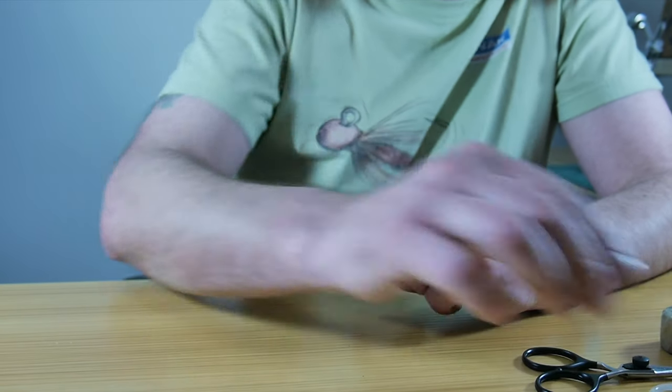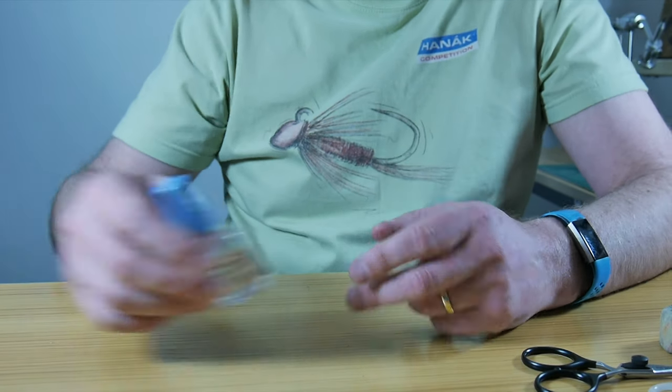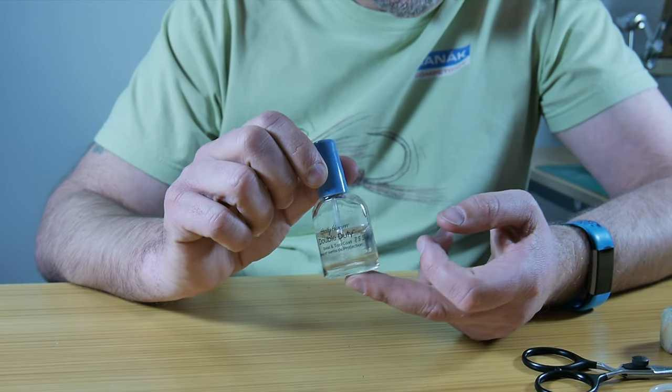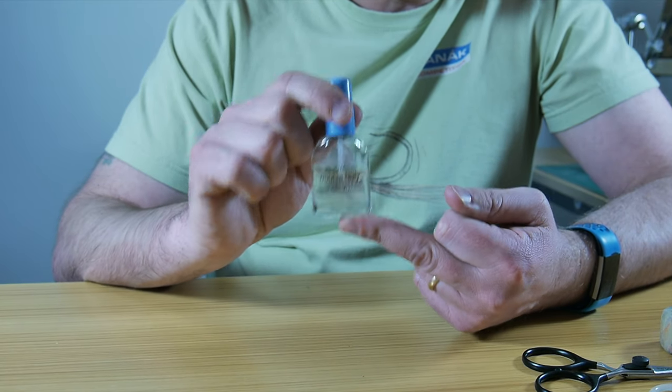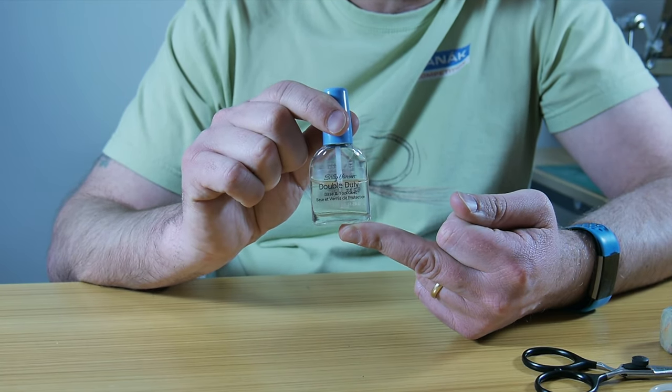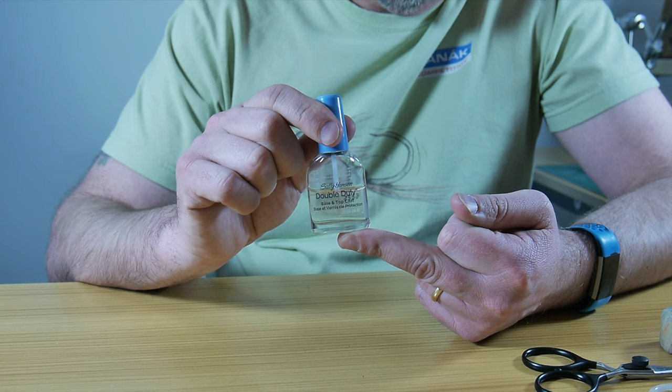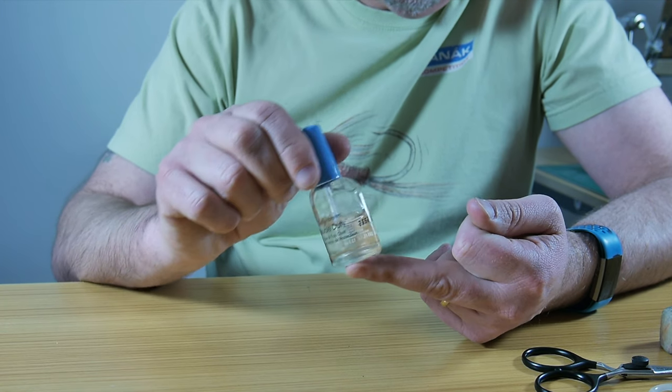So that's what I would call the essential tools. And last but not least, you're going to need some either head cement, UV varnish, or Sally Hansen Hard as Nails, just to finish your fly off.